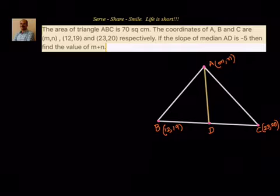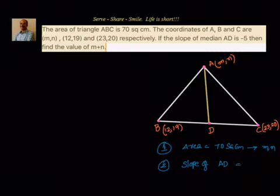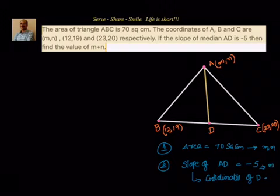Let's write down the approach we want to follow to solve this problem. The first step: we have been given that area equals 70 square centimeters — from that we should be able to get an equation or condition in terms of M and N. Second, we have been given slope of median AD equals minus 5, so to get slope of AD we first need to find the coordinates of D. Once we get coordinates of D, we equate slope of AD to minus 5 and get another equation in M and N, then solve them.